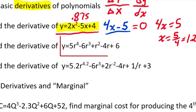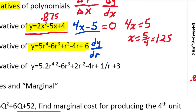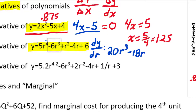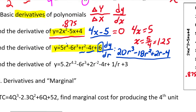Let's practice a couple more derivatives. For a function in terms of r, we write dy/dr — the change in y as we change r. Applying the same power rule: 4 × 5 = 20, giving 20r³; then 3 × 6 = 18, giving -18r²; the -4r term becomes just -4; and the derivative of the constant 6 is zero. So we don't write that. That's our derivative — it tells us the slope at any point.